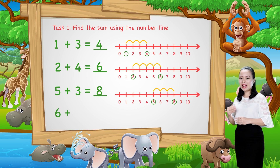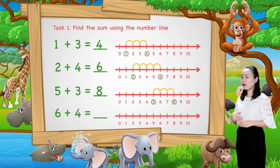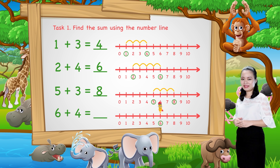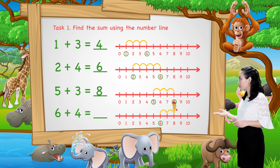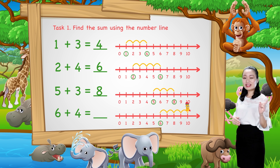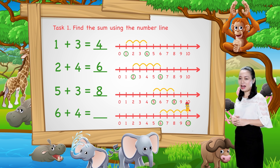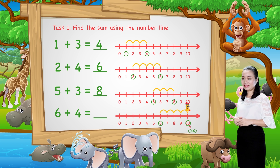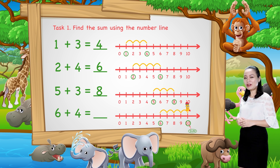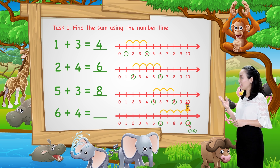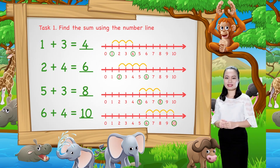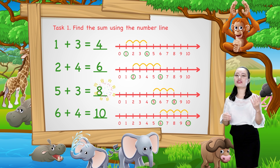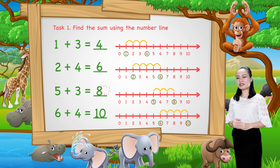The last one: 6 plus 4. We start from number 6. Then, jump four numbers to the right. Then, see the number where we stop. This number is the sum. Here, we stop at number 10. Therefore, 6 plus 4 equals 10. I hope you enjoy the lesson. Bye for now and see you soon.